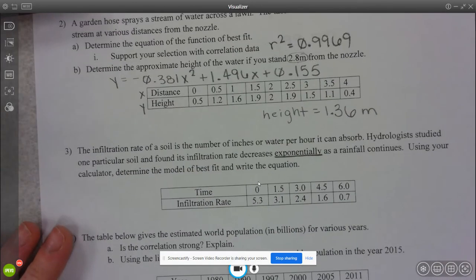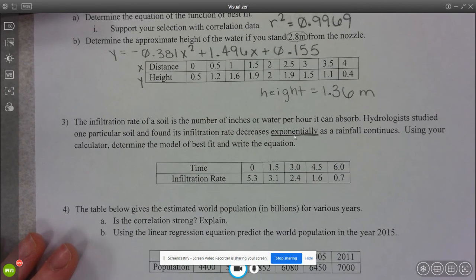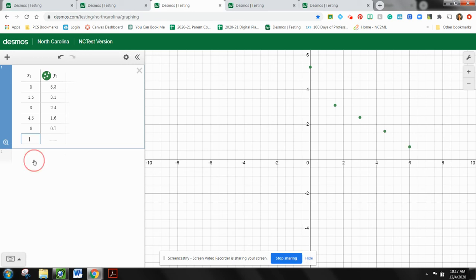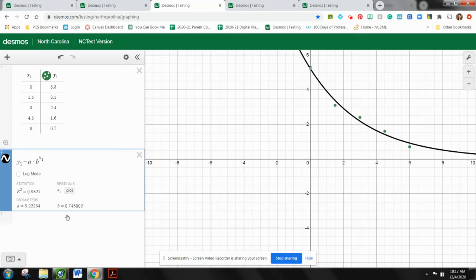All right. So one thing I want to look at before we go to our next table in Desmos, this says exponential in the wording of the problem. It's extremely important that we read these statements before we try to do any work with these regression models. So they're telling us right now that they want this to be an exponential model. All right. So our regression, our R squared, 98%, that's pretty darn good as well. So our equation would be Y equals 5.22 times 0.75 to the power of X.